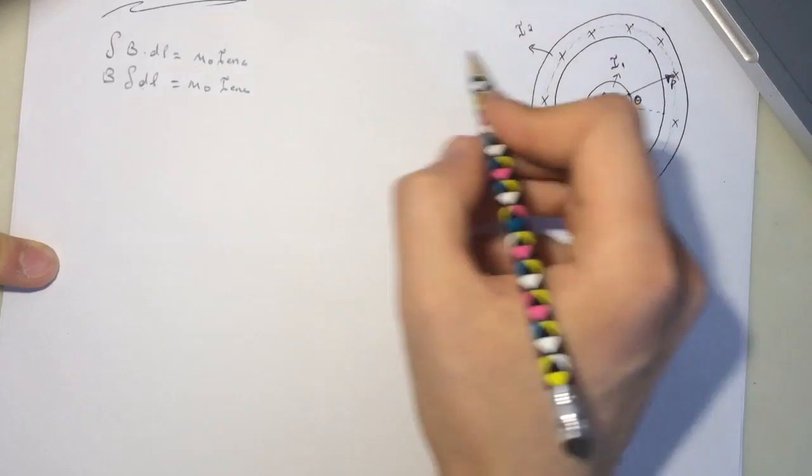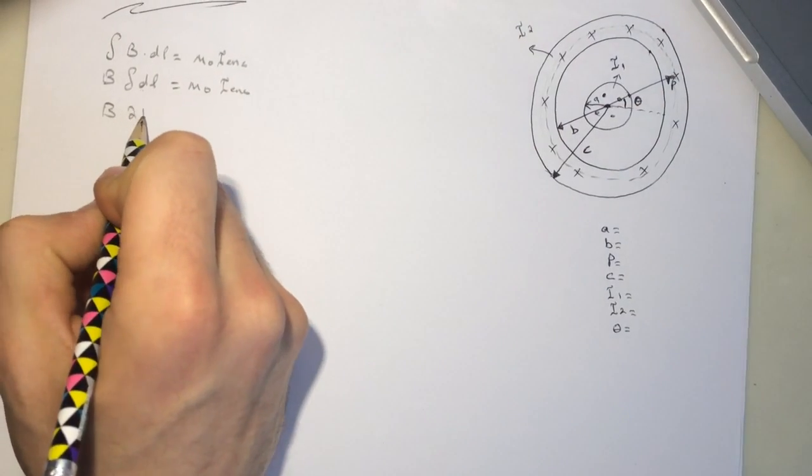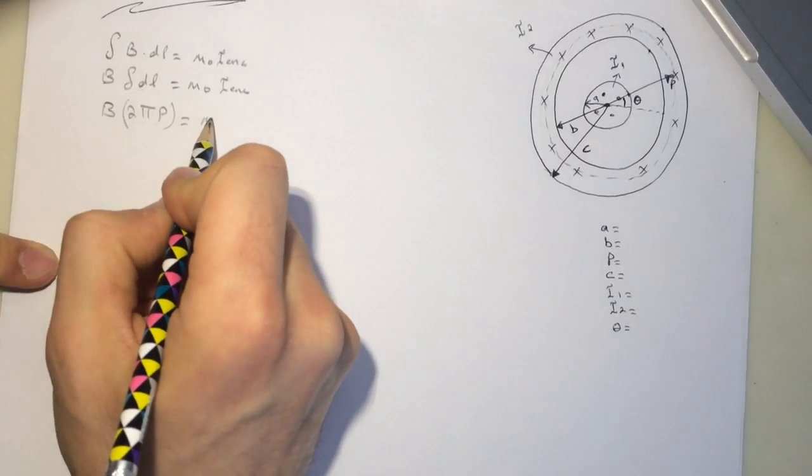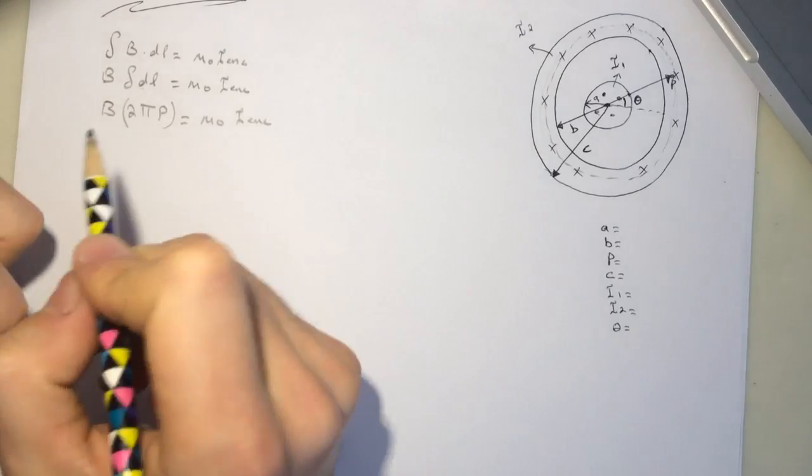So the dl here is just 2 pi p. We want to do some conference of this part. So it's B 2 pi p equal mu knot i enclosed. Now let's find the i enclosed.